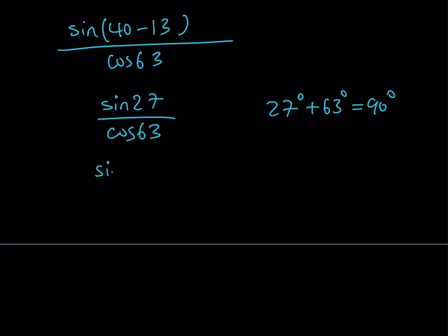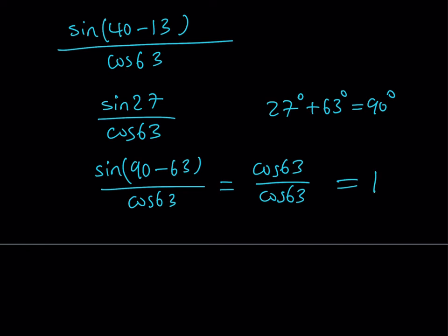In other words if you replace sine 27 with sine of 90 minus 63 and then divide it by cosine of 63, you can now write the sine 90 minus alpha as cosine of alpha which is cosine 63 divided by cosine 63. And that's going to give you 1.